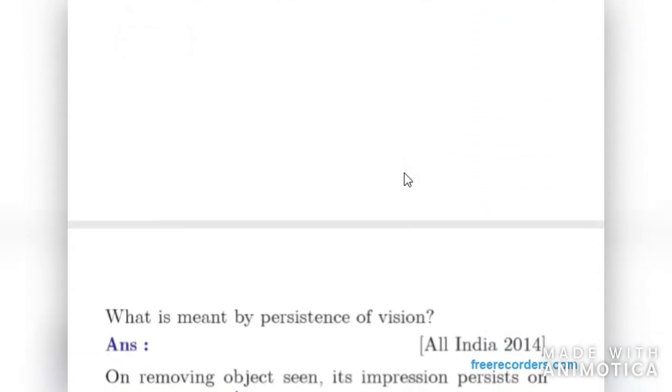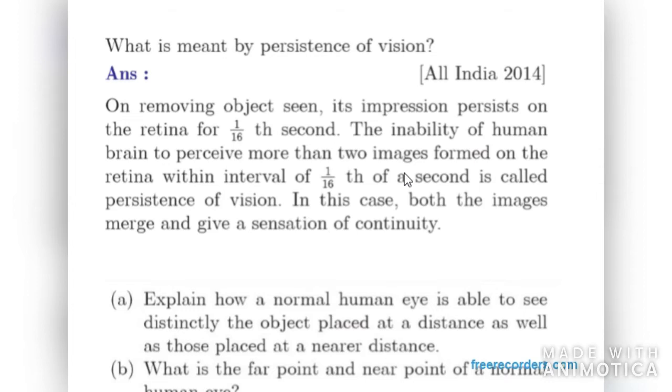Moving on to next. What is meant by persistence of vision? When we remove an object seen, its impression is persisted in our retina for 1/16th second only. Therefore we have persistence of vision - the inability of human brain to perceive more than two images formed on the retina within interval of 1/16th of a second is called persistence of vision. In this case, both images merge and give a sensation of continuity.